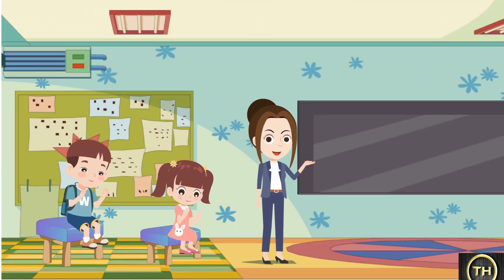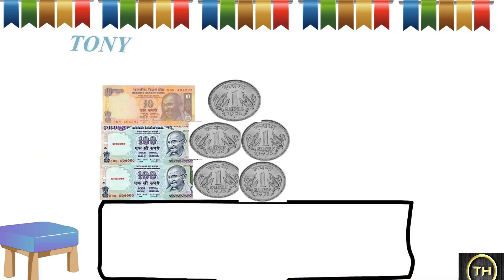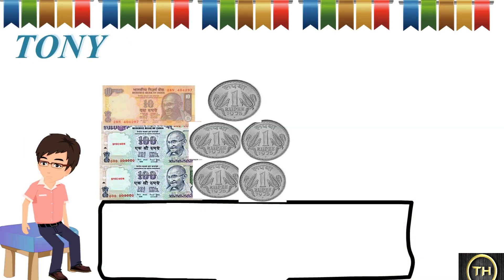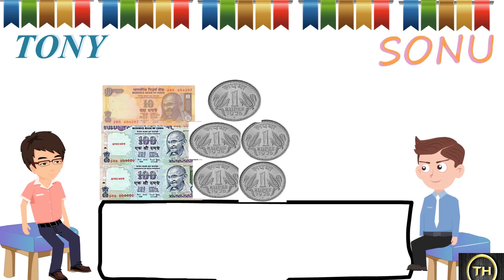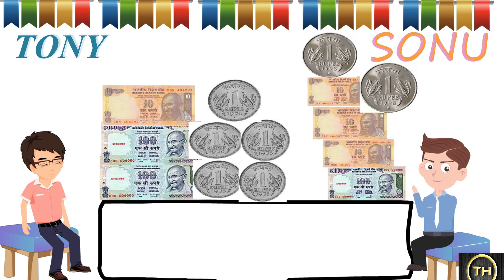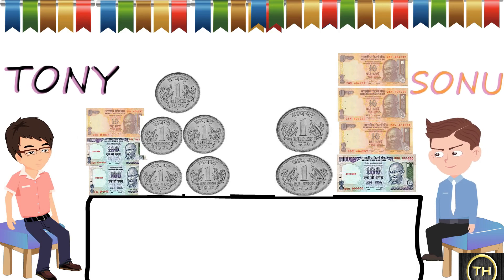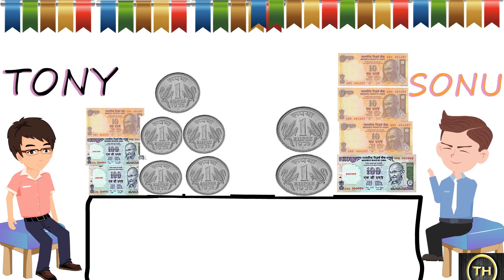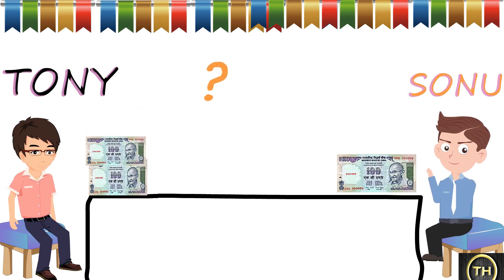Now we will see another example. Tony has 2 hundred rupee notes, 1 ten rupee note and 5 one rupee coins, and Sonu has 1 hundred rupee note, 3 ten rupee notes and 2 one rupee coins. How many hundred rupee notes do they have altogether? Let us find out.